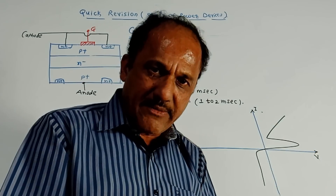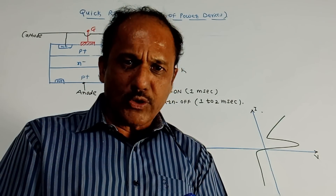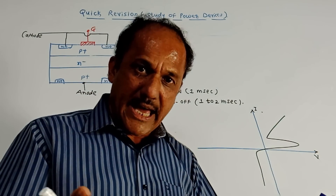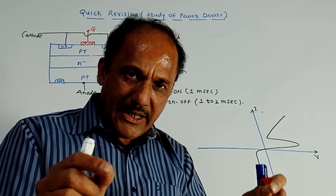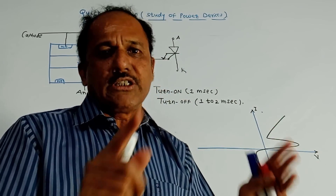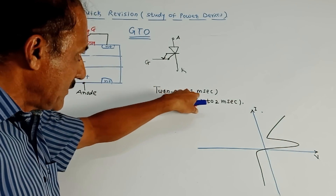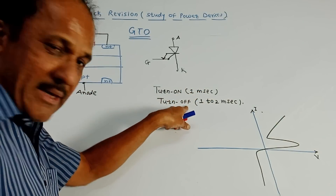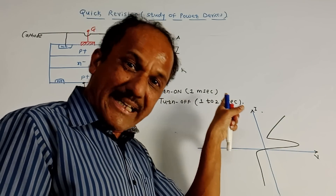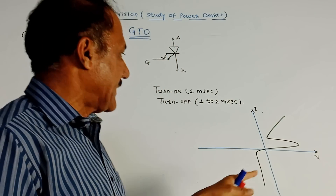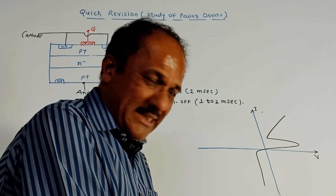In the forward condition, the GTO operates the same as the SCR. Whenever you want to switch off this device, you need to apply a negative pulse at the gate terminal. The same two-transistor model is applicable for GTO. When a negative pulse is applied, it drains out the excess current from both transistors Q1 and Q2, switching off the SCR. Typical turn-on time is 1 millisecond, the same as SCR, but turn-off time is much less — 1 to 2 milliseconds for GTO versus typically 30 milliseconds for SCR.